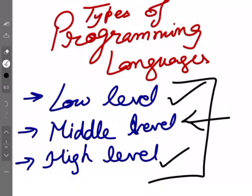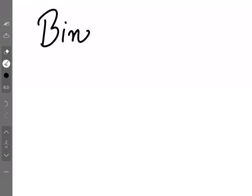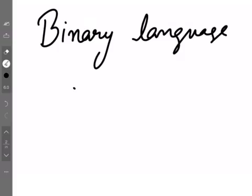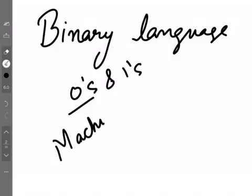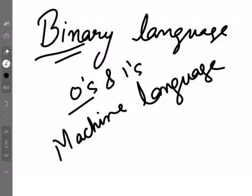Middle-level language is only C language — I will discuss why later. But first of all, the language the computer understands is only one language, which is binary language. What your machine understands is binary language — the language of zeros and ones. That's why this language is also called machine language.